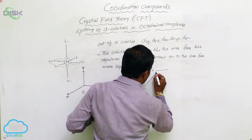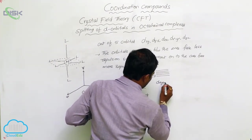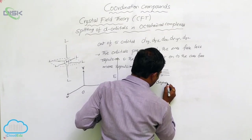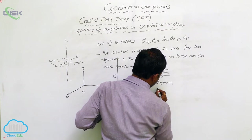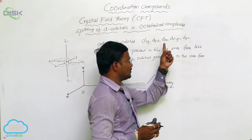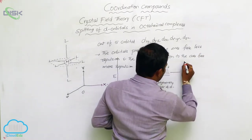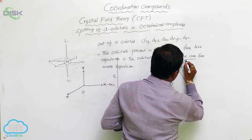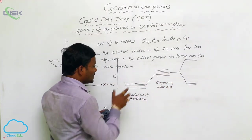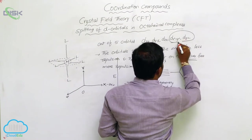In the presence of ligands added to metal complexes, the energy of d orbitals increases. This is called the degeneracy state of d orbitals. There are 5 lines, each indicating one type of d orbital: dxy, dyz, dzx, dx² and dz². While those ligands approach, out of the 5 d orbitals, whatever d orbitals are present on the axis — that means dx²y² and dz² — are present on the axis.